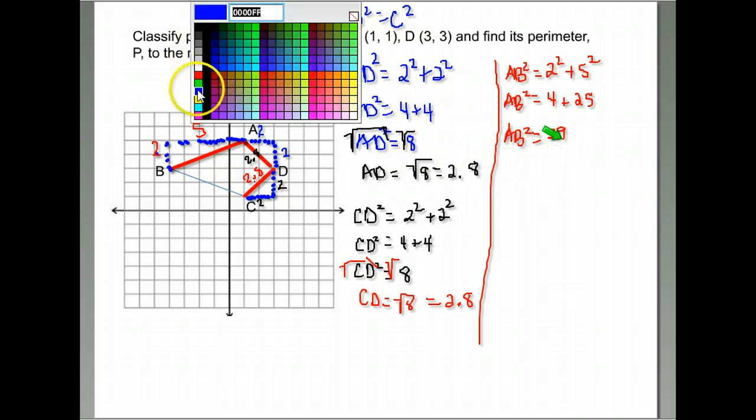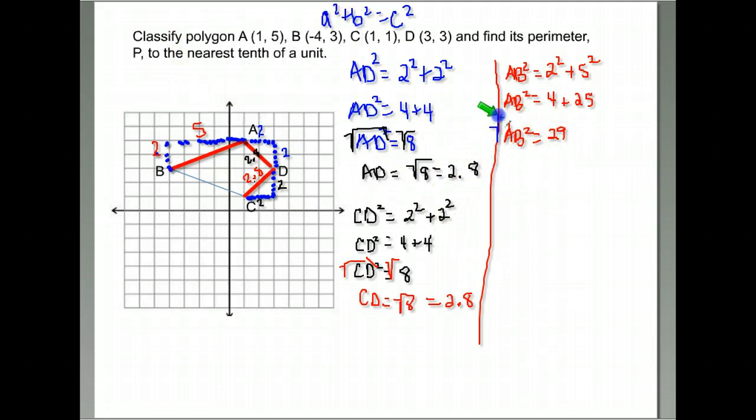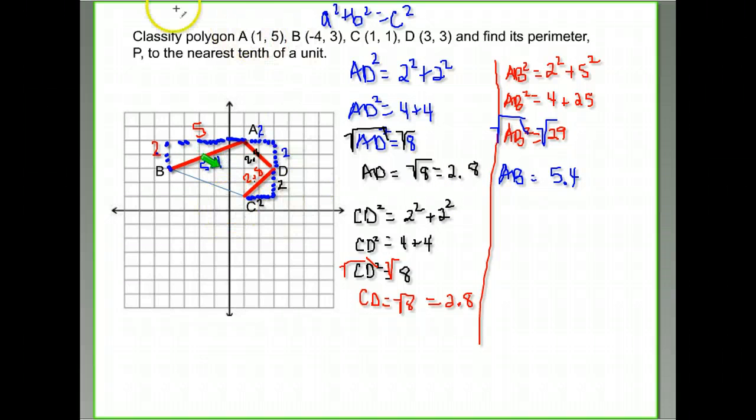And finally, to get rid of that squared, we take the square root of both sides. And we get that AB is 5.38. They wanted it to the nearest tenth, so I round that to 5.4. One more side to go.